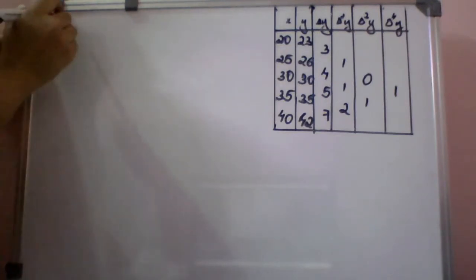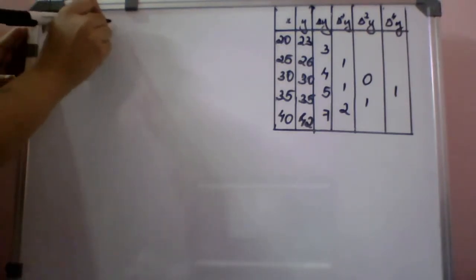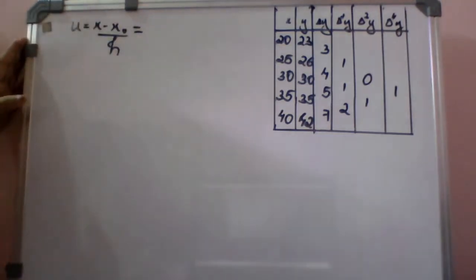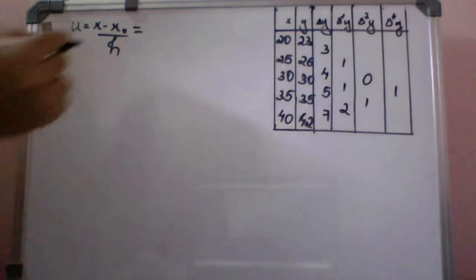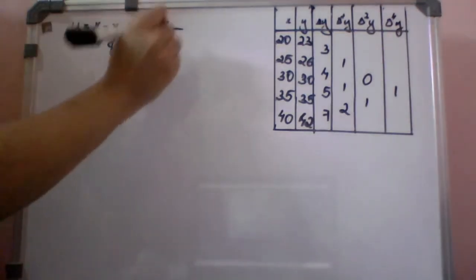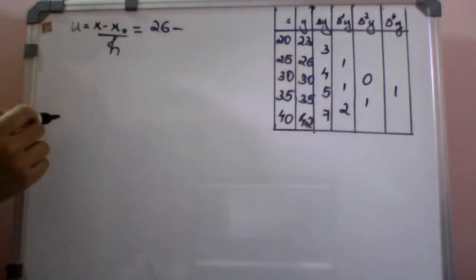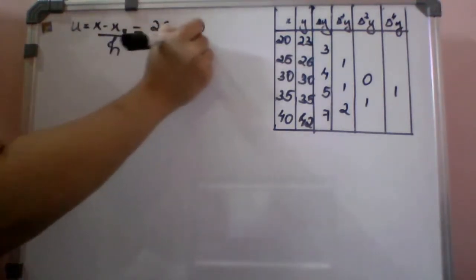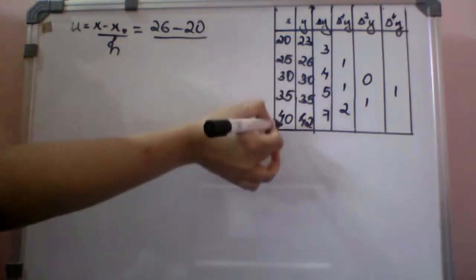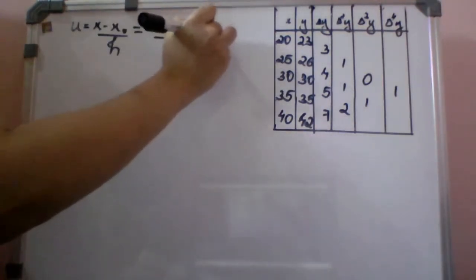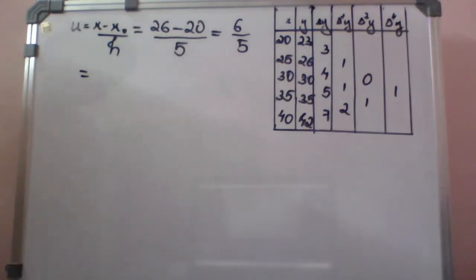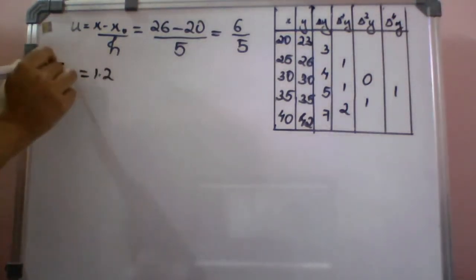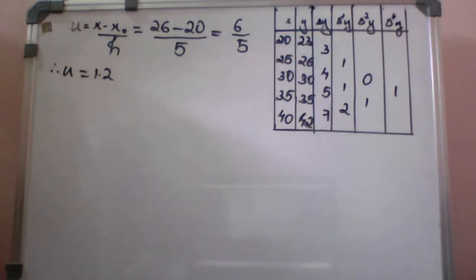Now we find the value of u. u is equal to x minus x₀ divided by h. Here x is 26, x₀ is the first value which is 20, and h, the common difference, is 5. So u equals (26 minus 20) divided by 5, which is 6/5, equal to 1.2.